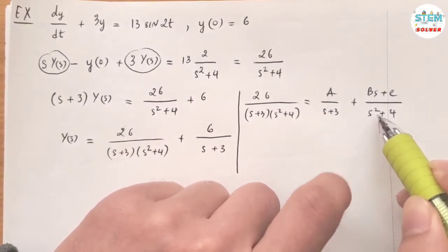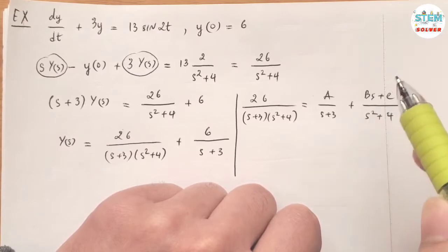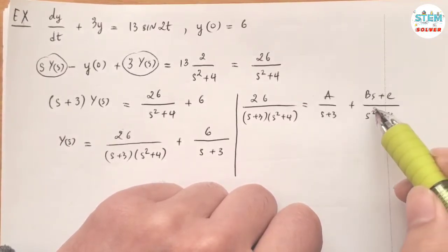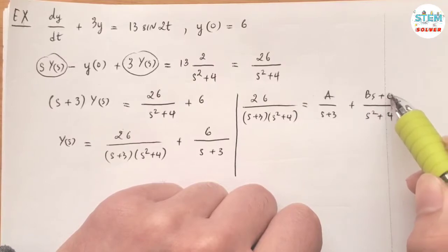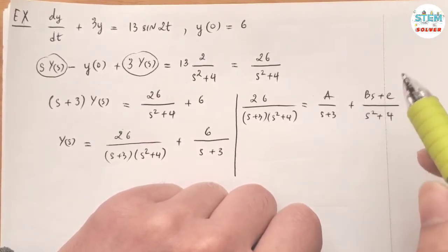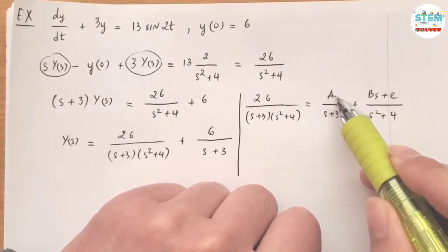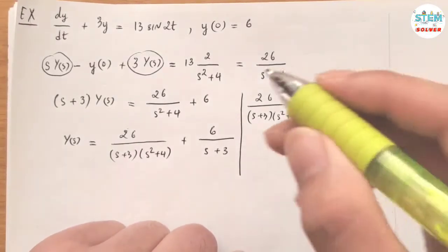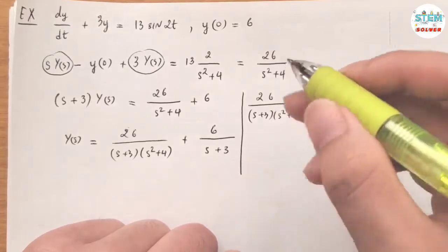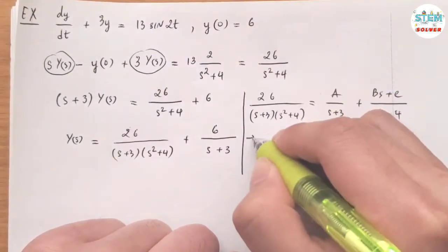I need to account for every power of s less than 2, meaning s to the first and s to the zero. B could be zero, giving only a constant, but it could also be nonzero, so we account for every possibility. The linear factor already accounts for s to the zero, so it just has a constant A on top.